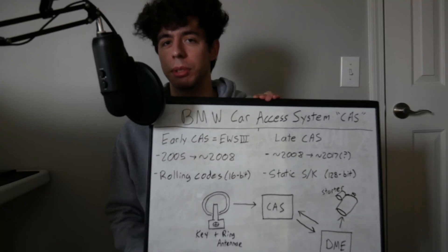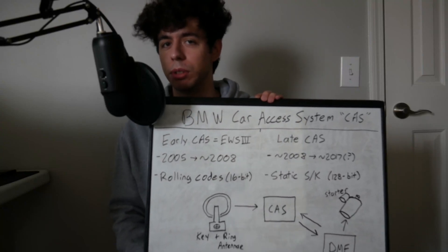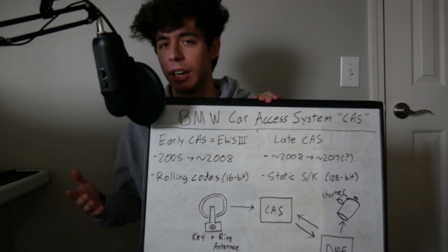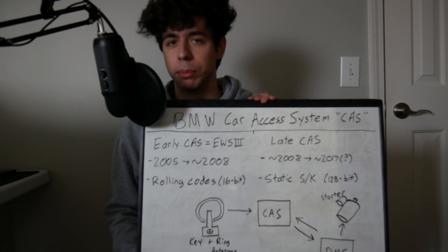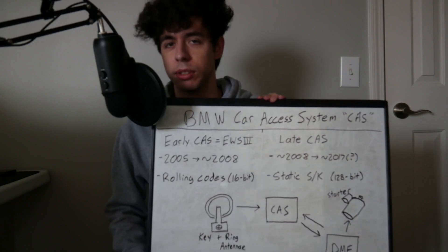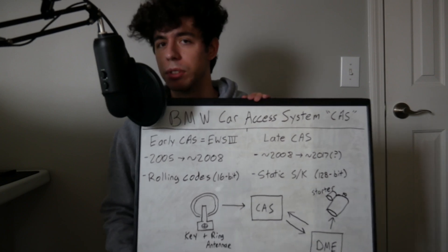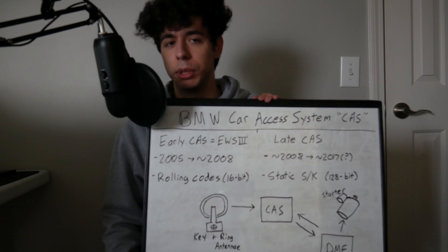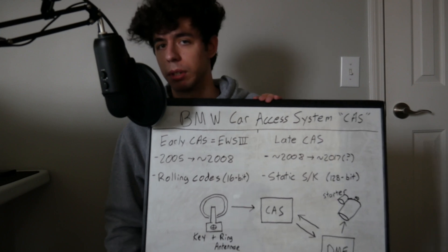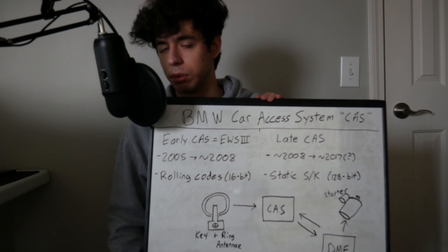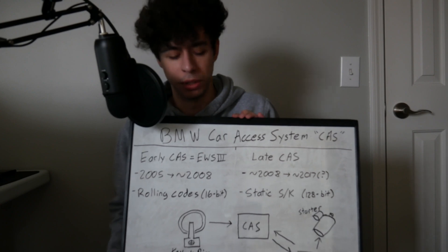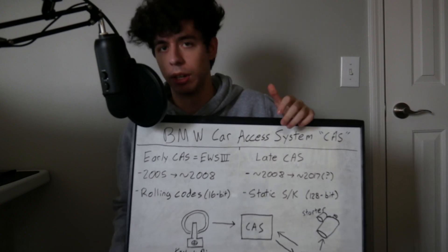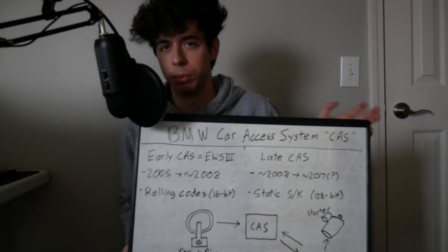Today we're going to be taking a look at BMW's Car Access System, or CAS. Taking a look at the big picture, CAS is essentially BMW's anti-theft system that they integrated into pretty much every single model beginning roughly in 2005, and as far as I'm aware is still currently used. There are two versions of CAS that were utilized and implemented into BMW's various models.